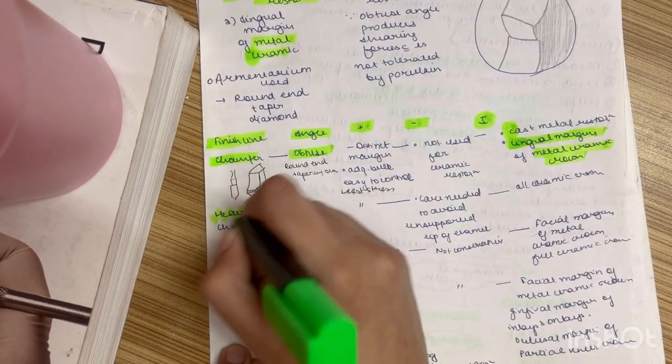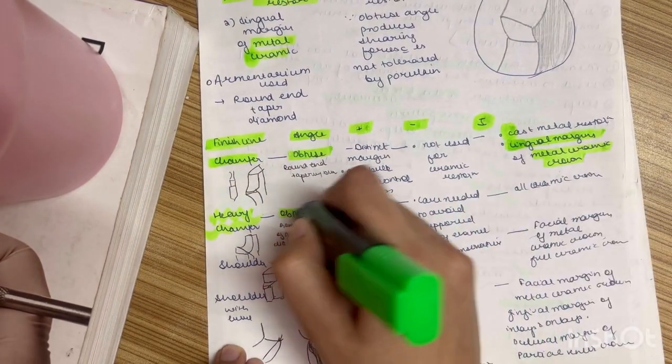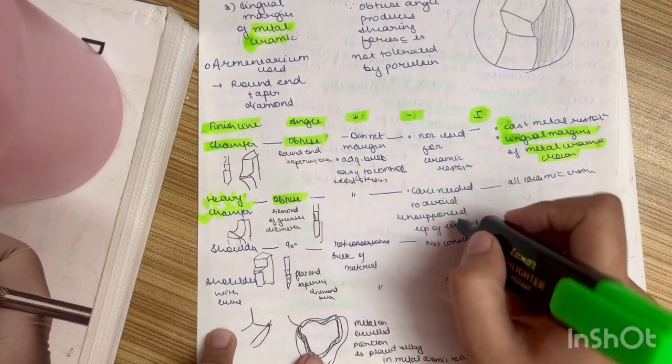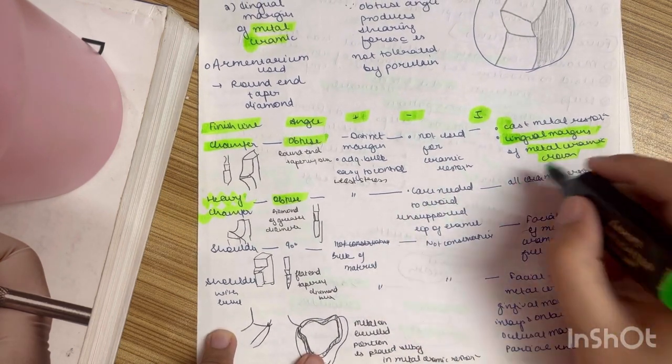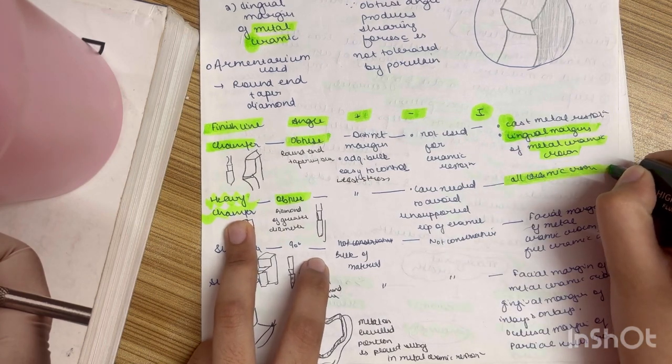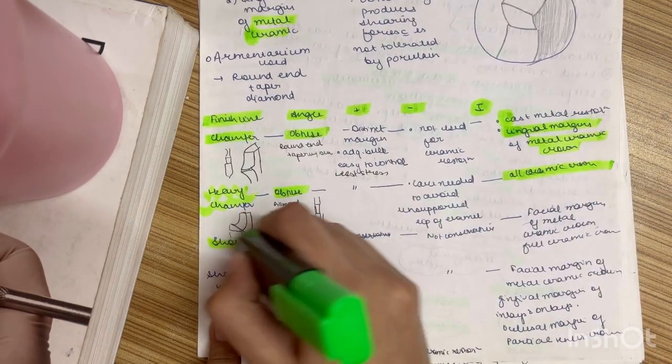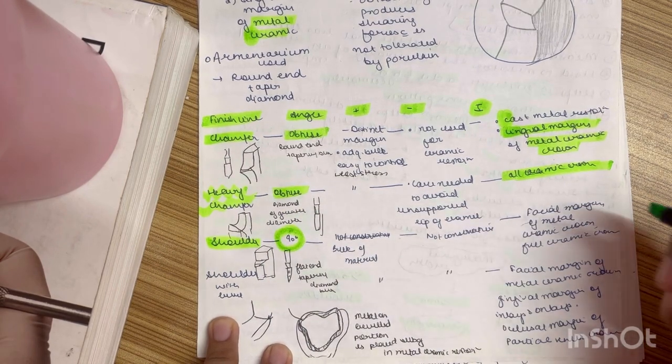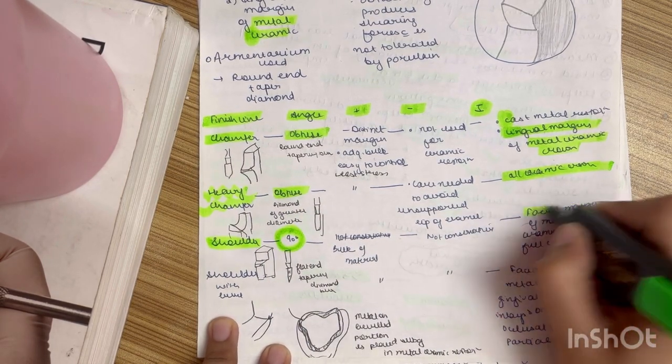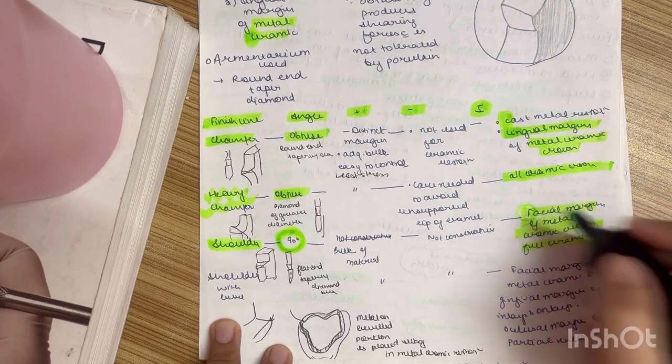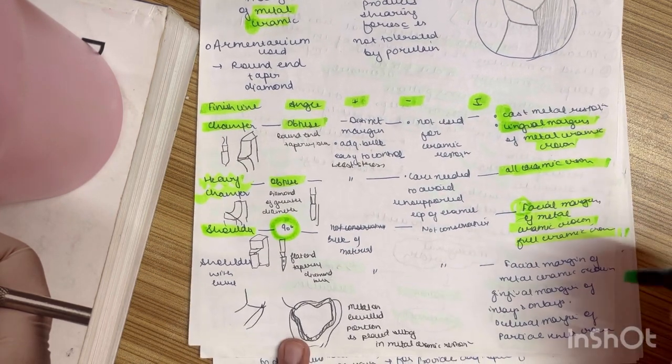Then we have heavy chamfer. It is obtuse. Same advantages. Now in this care is needed to avoid the unsupported lip of enamel. Now heavy chamfer is used in all ceramic crown. Then shoulder. Shoulder main angle is the thing that you need to remember: 90 degree. Then facial margin of the metal ceramic crown. Facial margin is the one that you will see. And full ceramic crown.